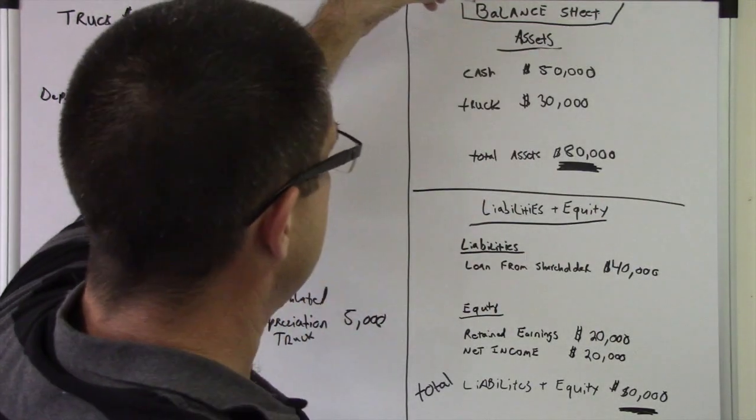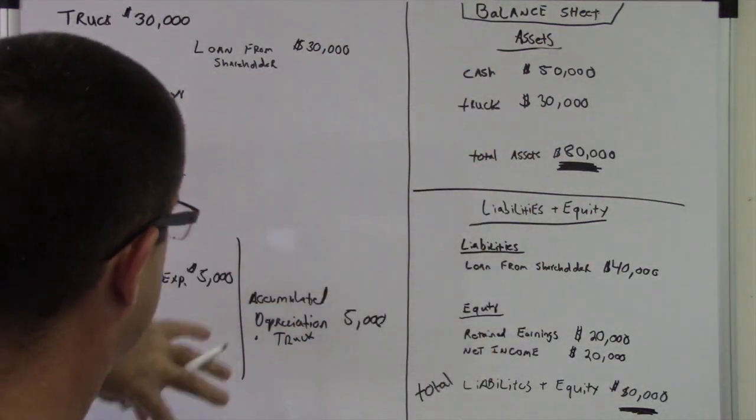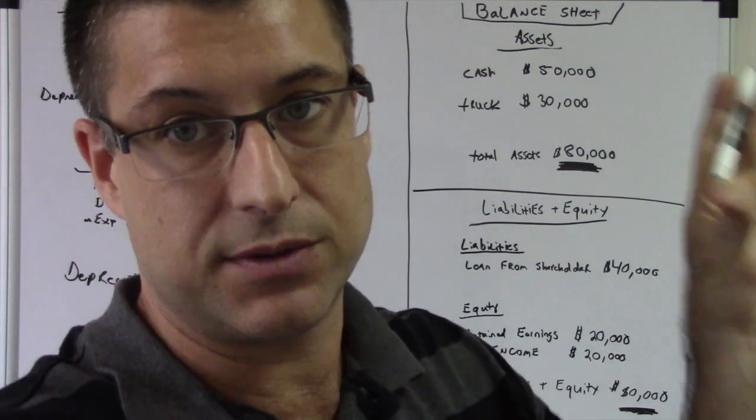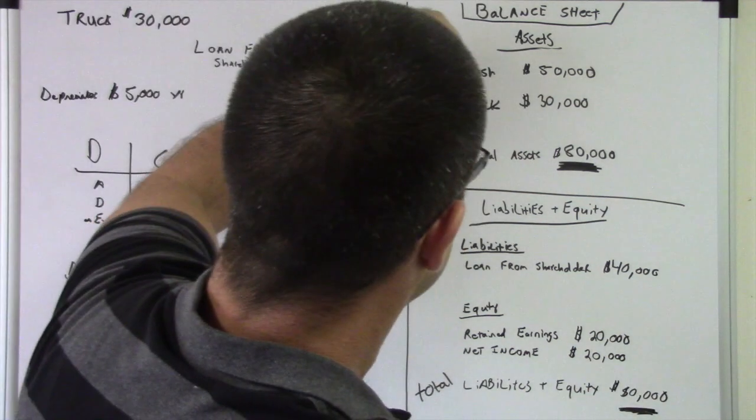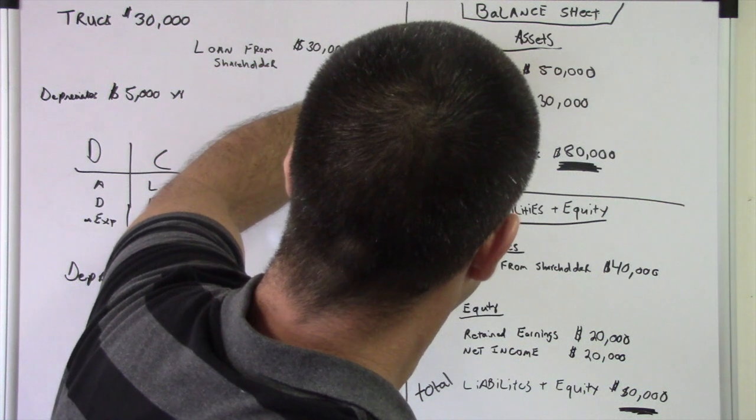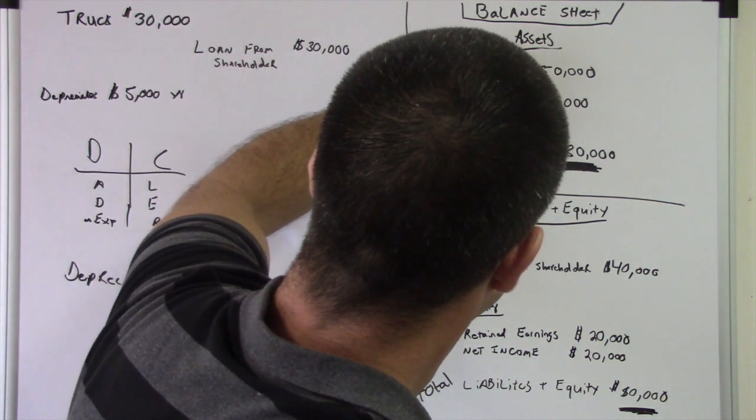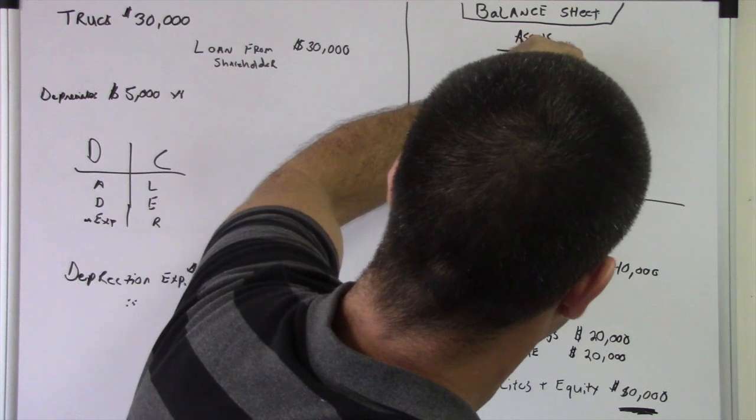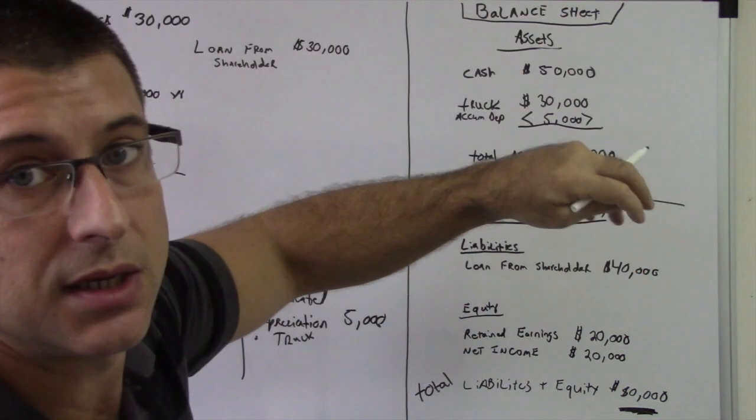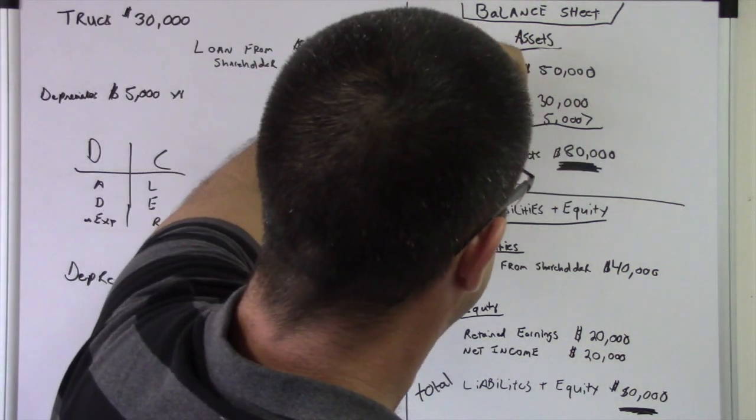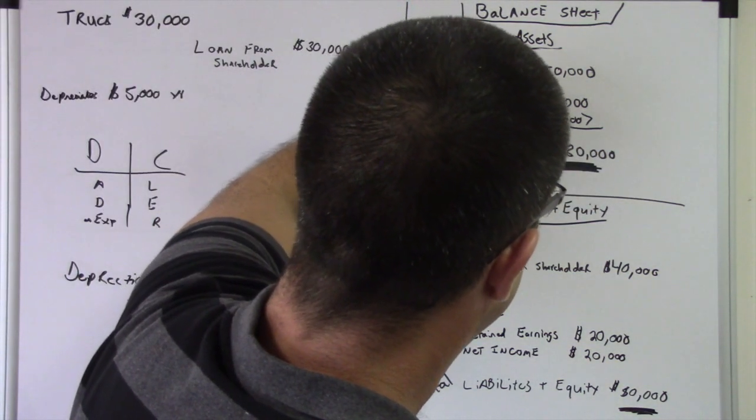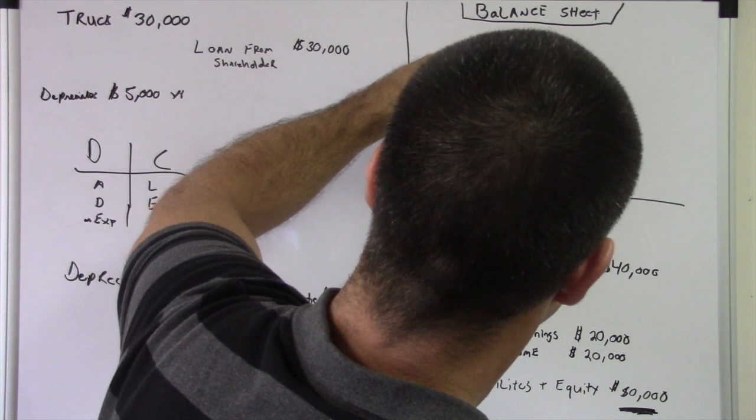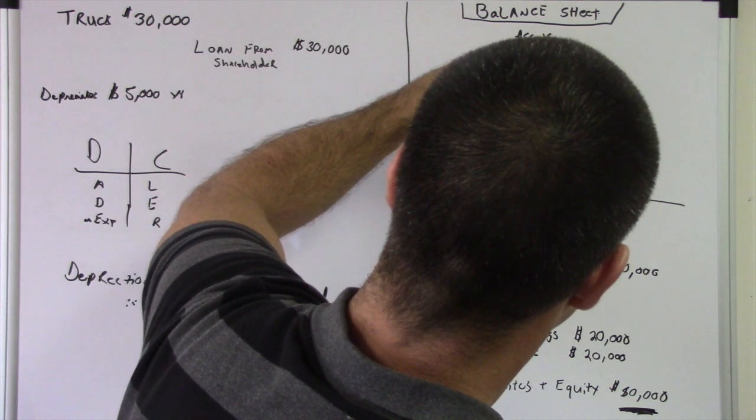So, now, this is how the balance sheet would look if we did that. And, say, we're going to say this is our only expense. The depreciation expense would be our only expense for the year. Just for this example. So, you have the truck. Then, you have accumulated depreciation, $5,000. The parenthesis is a negative. So, then you have $25,000 in your fixed assets.